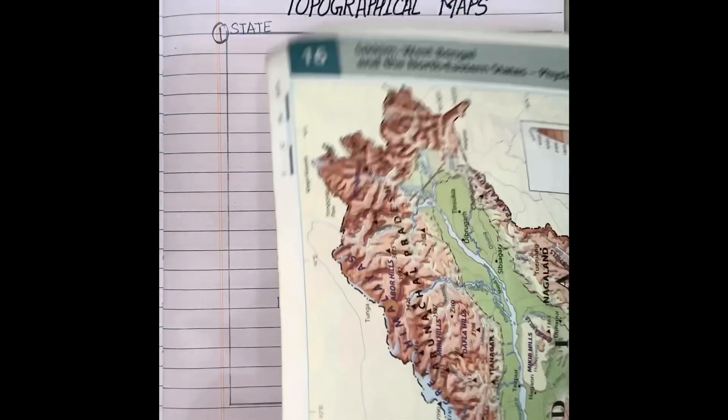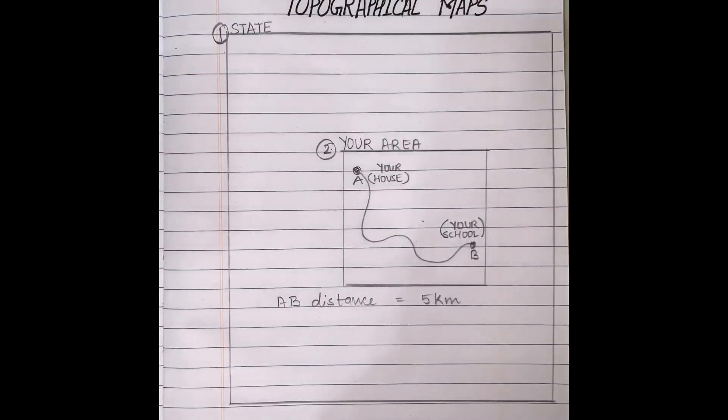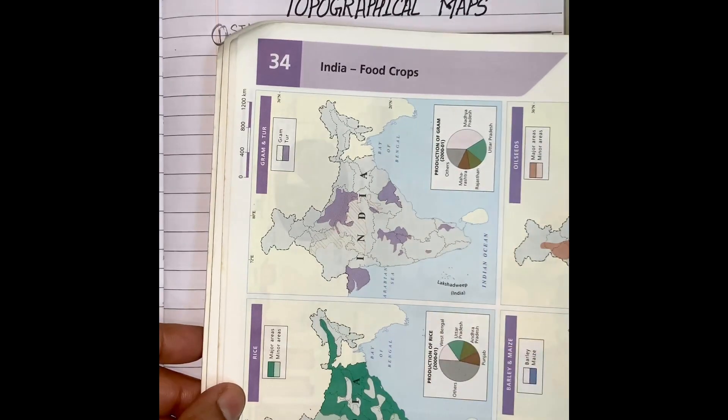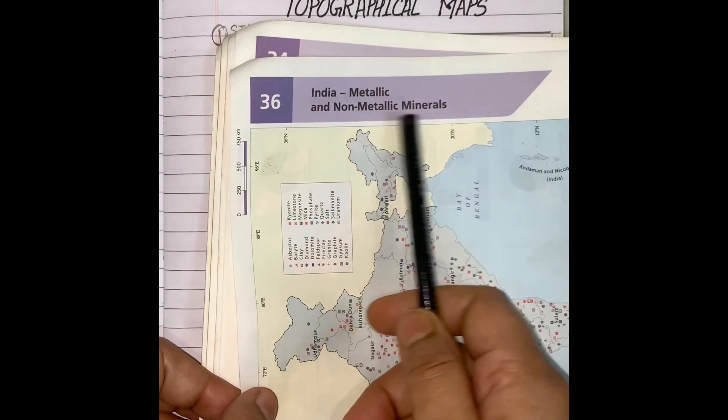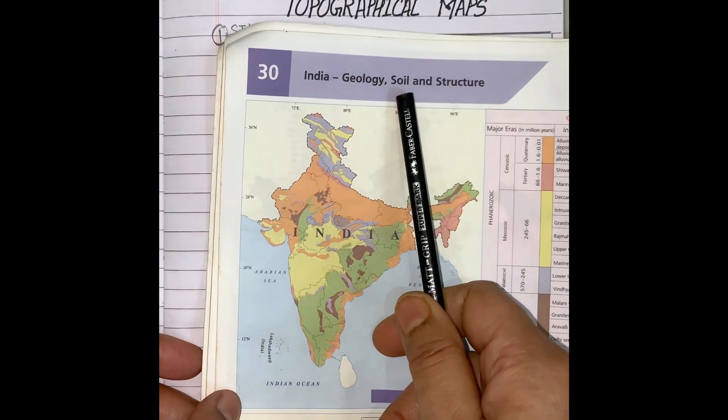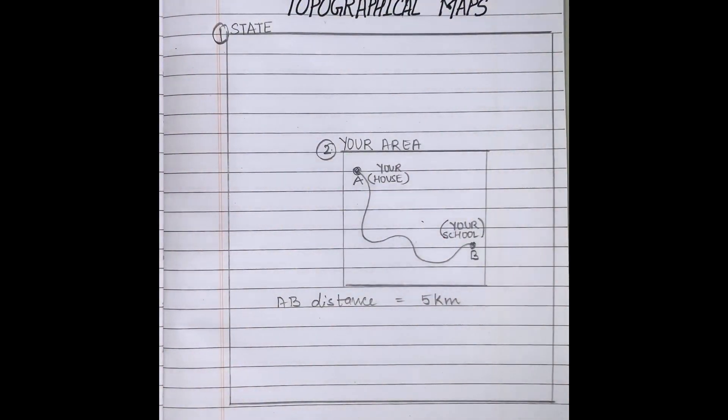In the same way, there are many maps which show food crops, distribution of crops, distribution of minerals, as well as distribution of soil. So there are many different kinds of maps. Here we will discuss topographical maps.